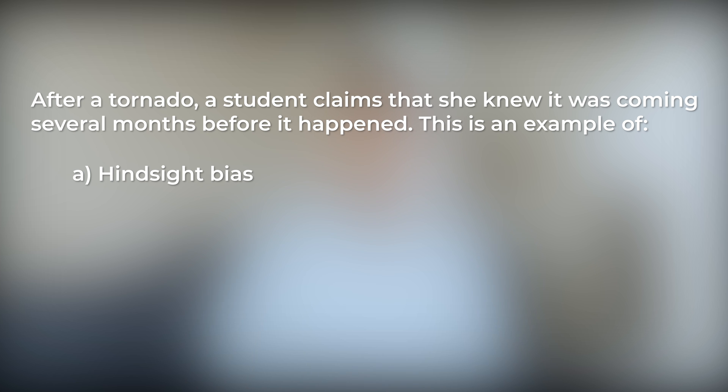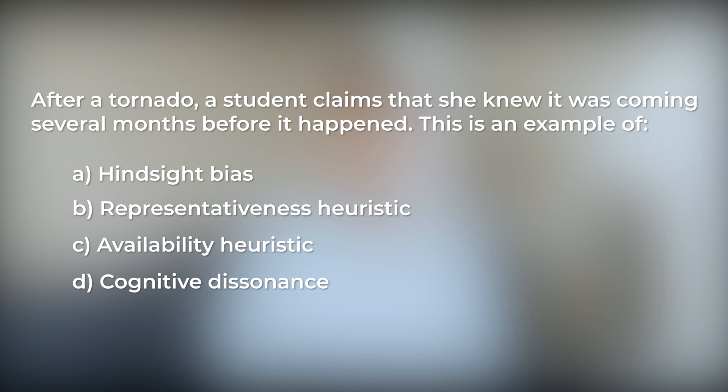Let's say you get the following question on your exam. After a tornado, a student claims that she knew it was coming several months before it happened. This is an example of: A, hindsight bias; B, representativeness heuristic; C, availability heuristic; or D, cognitive dissonance. If you don't know the definitions of these words, you will not be able to answer this question correctly.